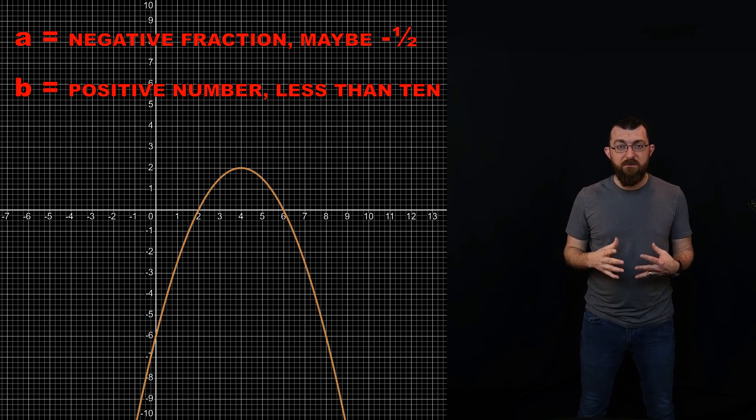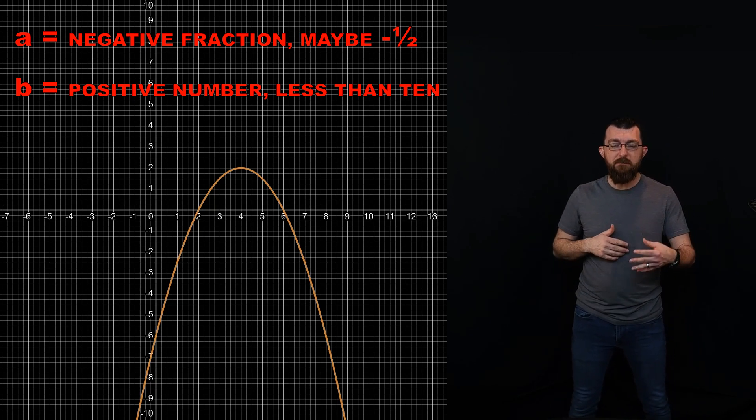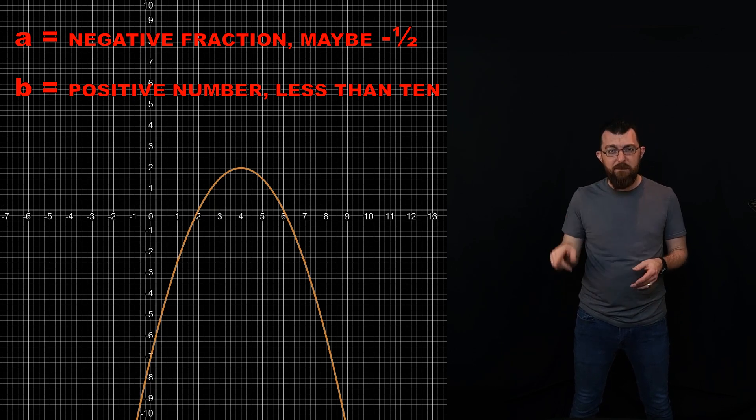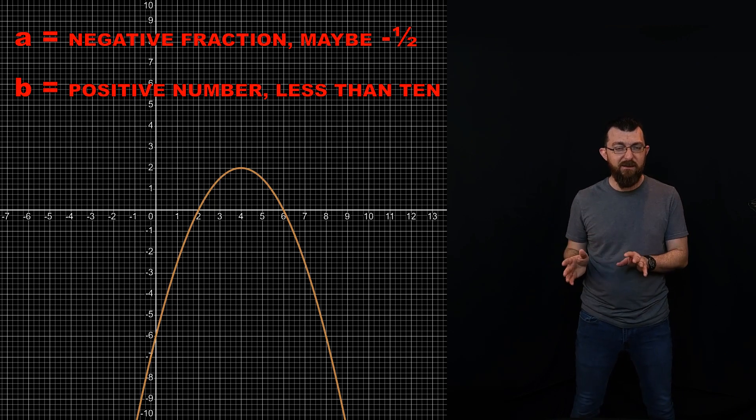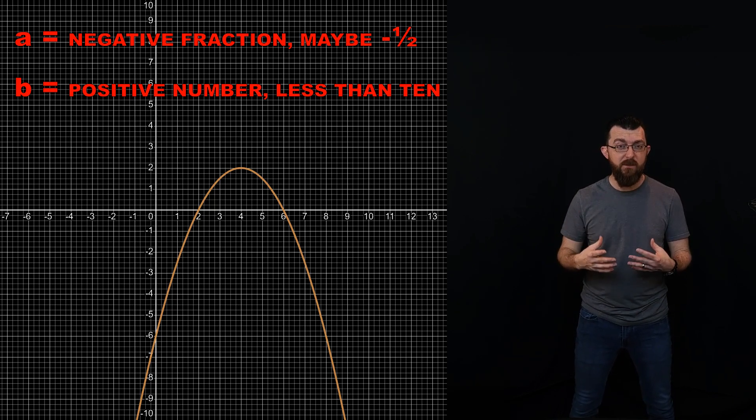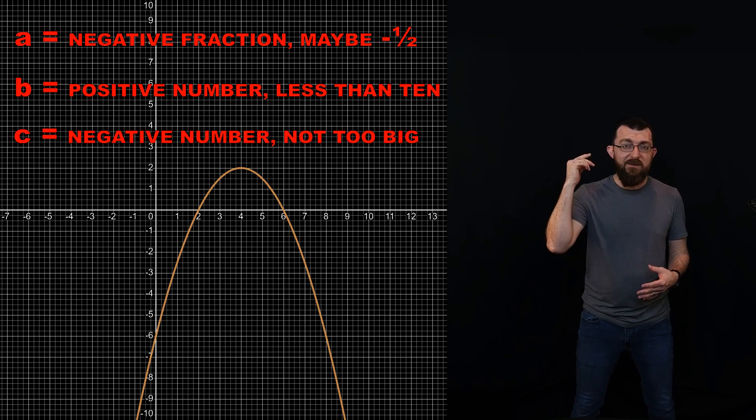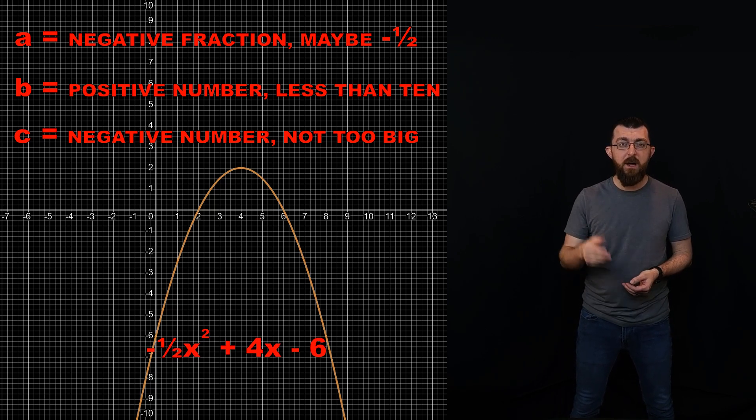As for the value of C, that one is going to be the trickiest to tell if you're not sure whether it's supposed to have been moved up or moved down. However, just notice how close that vertex is to the x-axis. Based on that parabolic shape that the vertex should be moving on, it seems like it should be a little bit further away from the x-axis at that point, that far to the right. So I'm going to say that this has been brought down some. I'm going to say that the value of C is probably something negative. Again, nothing too big. Probably just another negative single digit number. And indeed, the equation for this parabola is negative half x squared plus 4x minus 6.